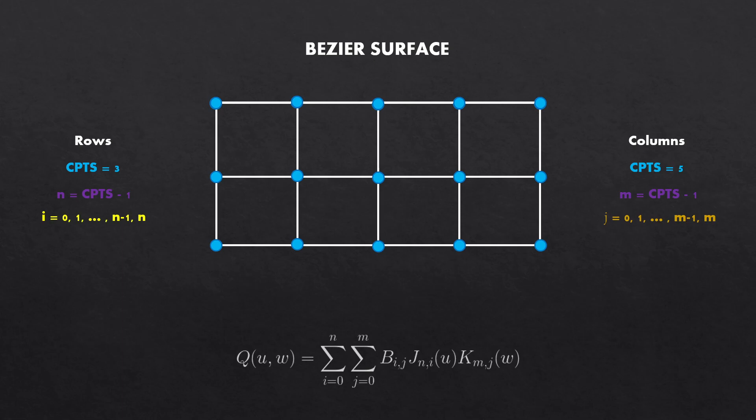Also rather than referring to rows and columns let's refer them in terms of u direction and w direction. Now I am explicitly using the nomenclature used in the equation so you can relate the parts of the equation to what I'm doing on the screen right now.